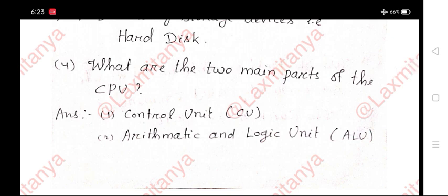Question 4: What are the two main parts of the CPU? Answer: 1. Control unit, 2. Arithmetic and logic unit.